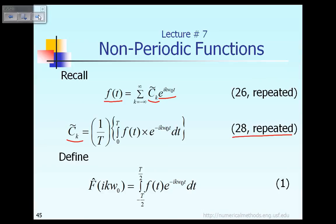Now let us introduce a new notation for convenience. Suppose we define f̂, that function f̂ depending on i, k, and ω₀. That function f̂ is defined according to equation 1: f̂ is equal to the integral from minus T/2 to plus T/2 of f of t times e raised to the power minus i k ω₀ t, dt.